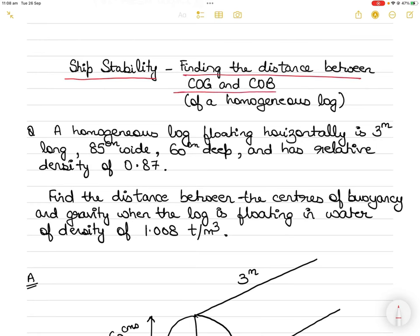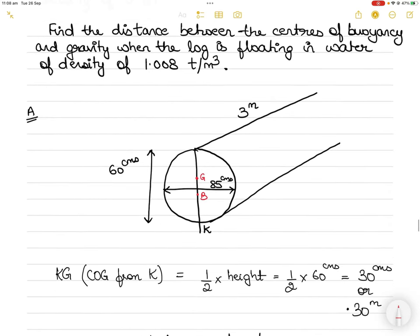If you don't know what a homogeneous log means, it's a log that is consistent in shape with no odd shapes. Just to show you an example, if I draw a homogeneous log this is what it will look like. There are no bumps here, the shape is not odd.